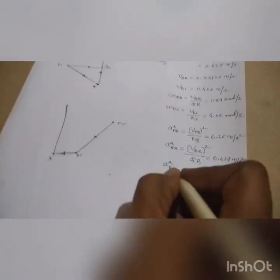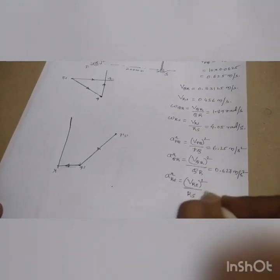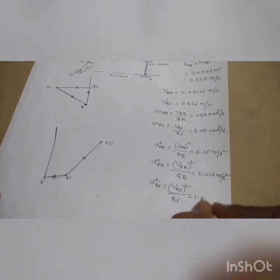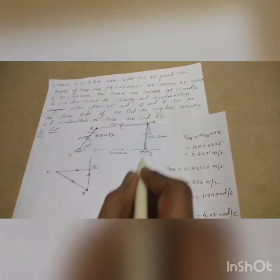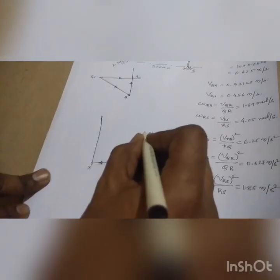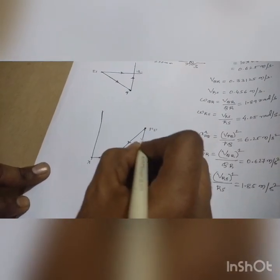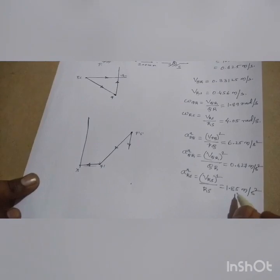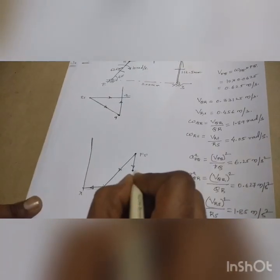For link RS, the radial acceleration is: AR_RS = VRS² / RS = (0.456)² / 0.1125 = 1.85 m/s². This acts along RS towards the center. From S' as the initial point and along the orientation of RS towards the center, I draw a vector of magnitude 1.85 m/s² and mark this point as Y'.